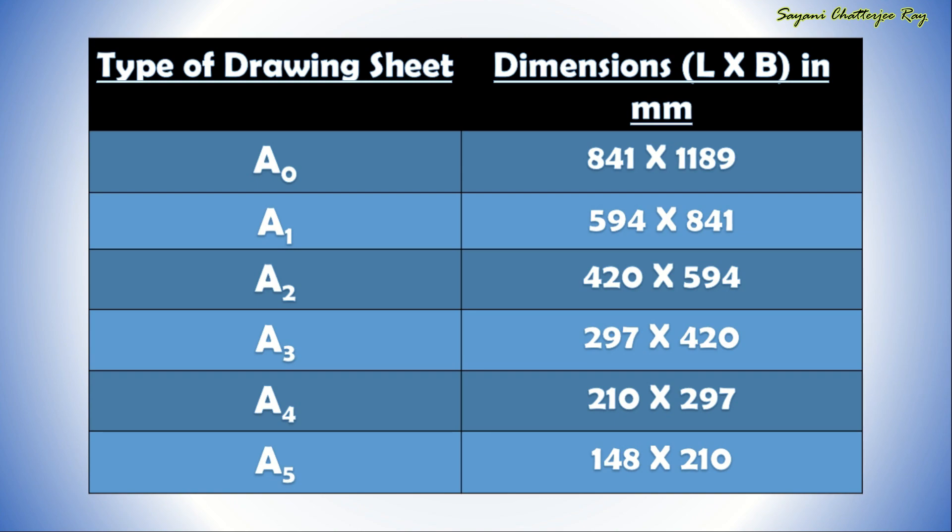Next is A3, 297 by 420. Next is A4 sheet, 210 by 297. And the last one is A5 size sheet, 148 by 210.